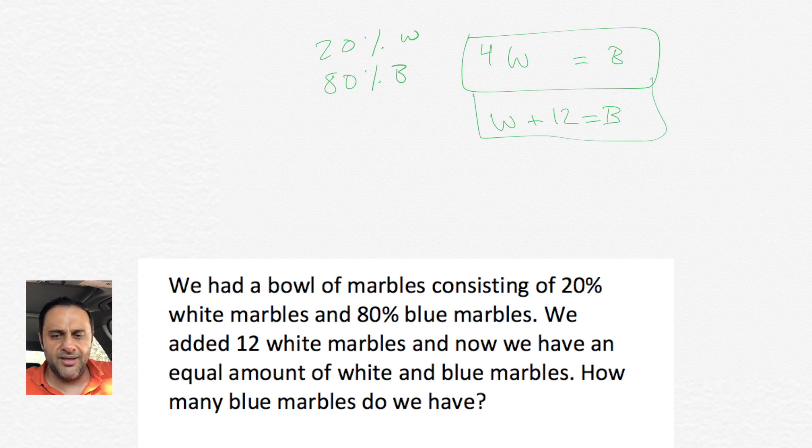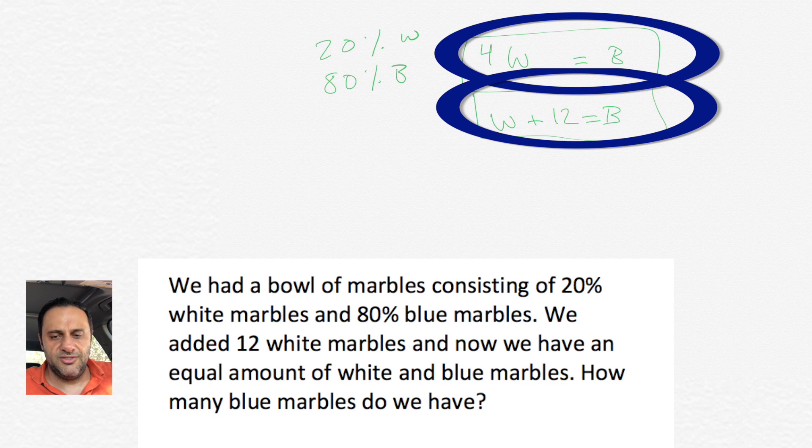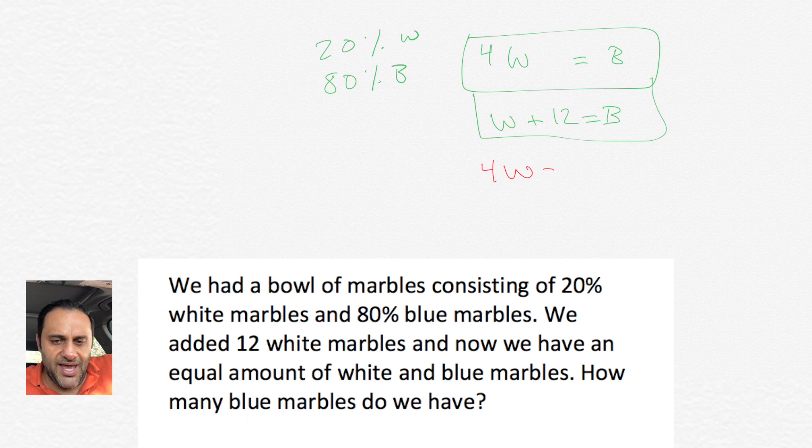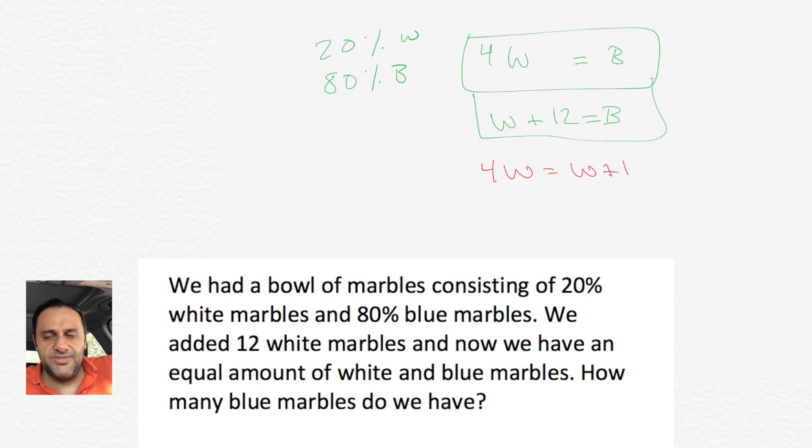Now the next one, we add 12 marbles to the white. Now we're not adding 12 marbles to 4 times white, we're just adding 12 marbles to white, so it would be W plus 12 as opposed to 4W plus 12. So we have W plus 12 equals how many blue marbles we have. So now we have two equations, two equations and two unknowns.